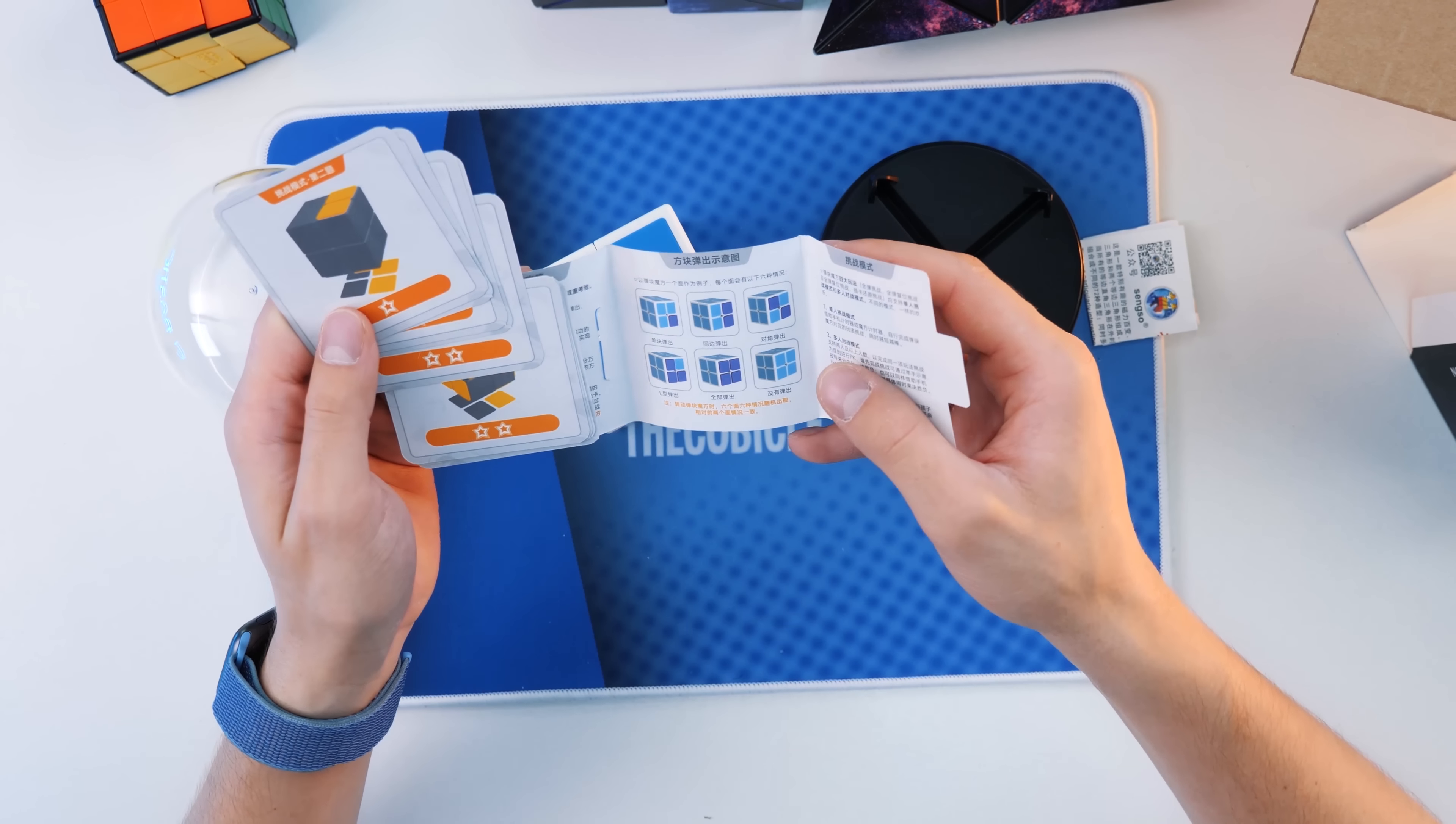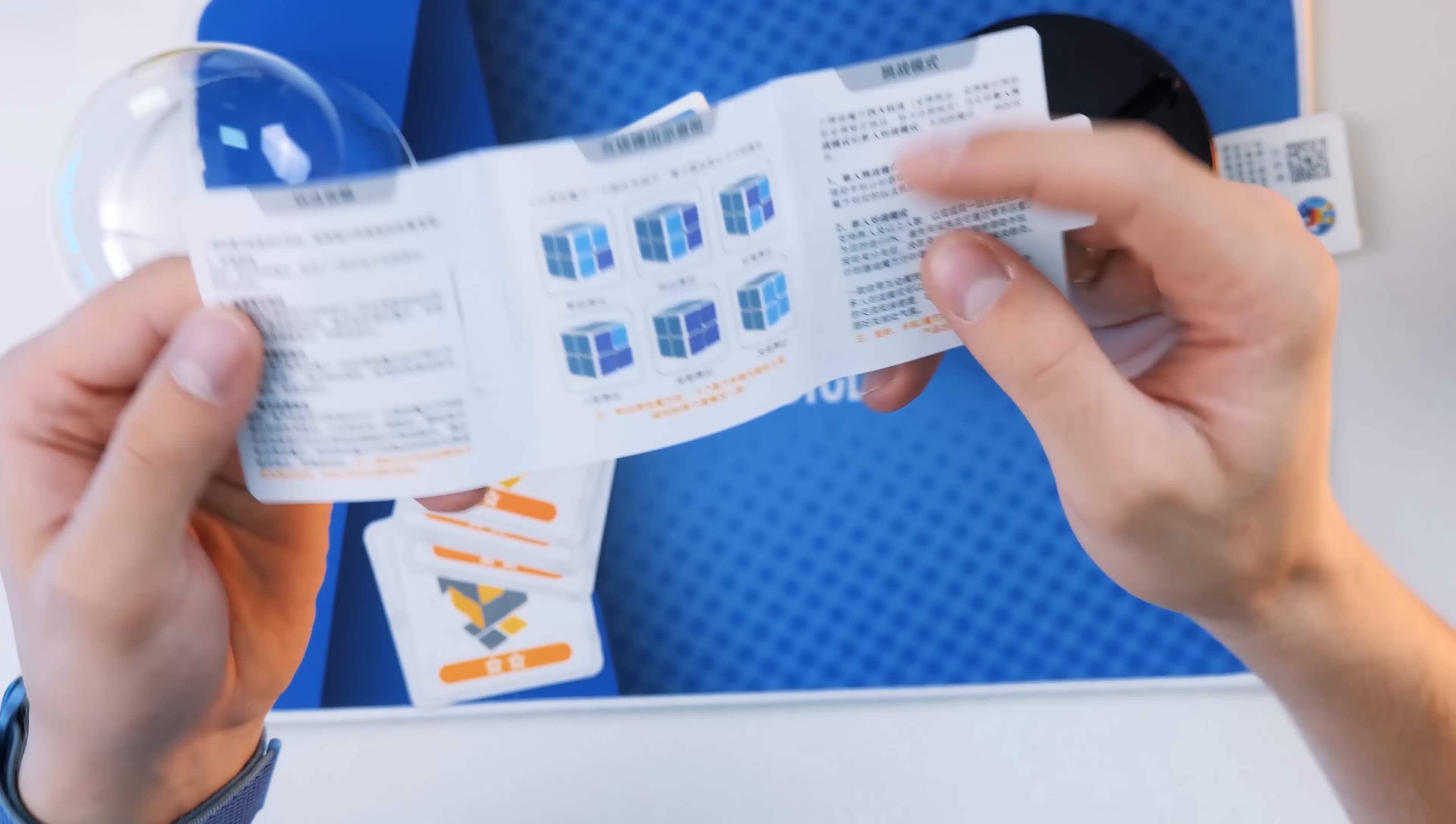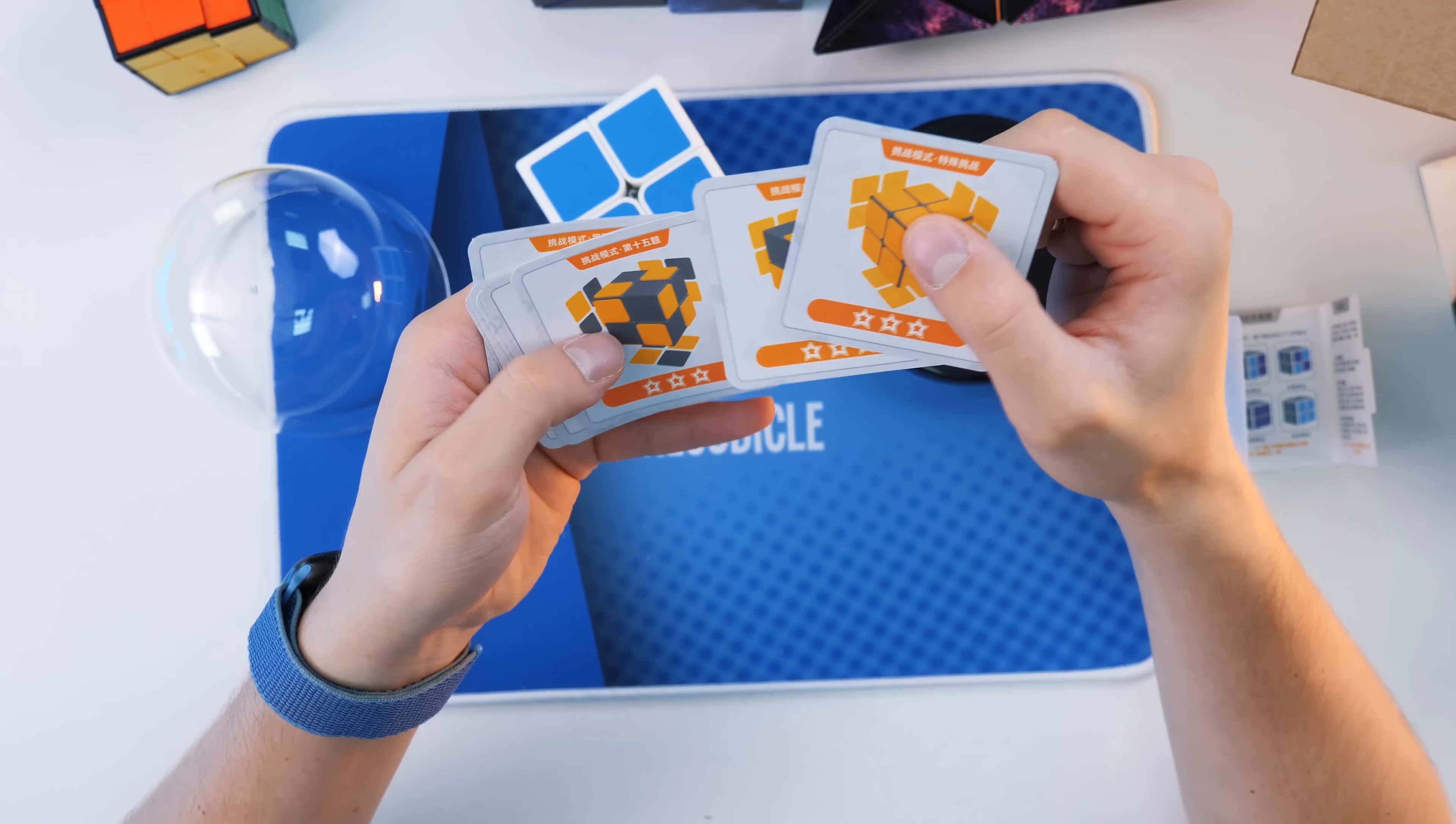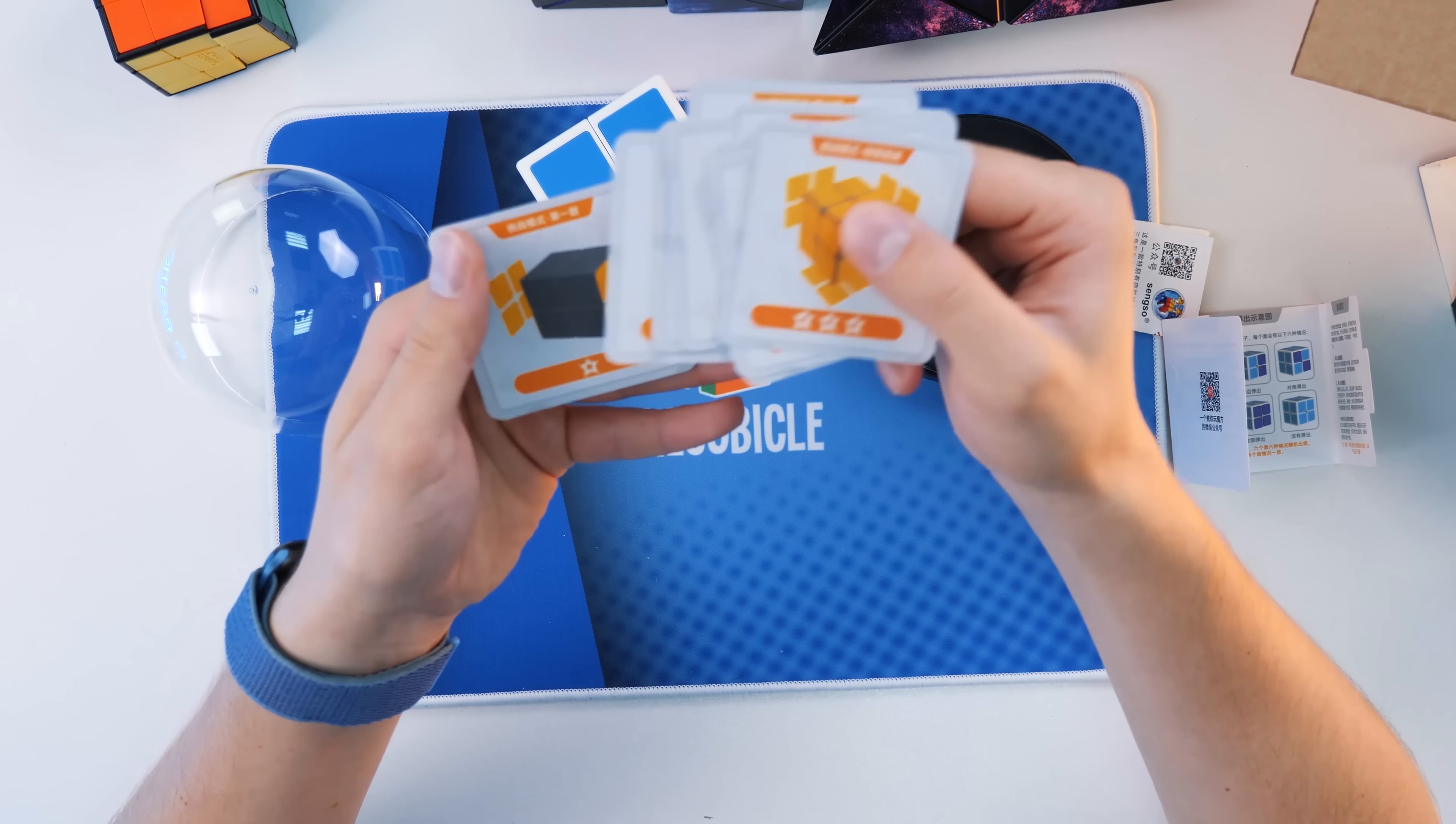There's something written here, and wait, and there's something drawn. If I knew the Chinese language, maybe I would understand what's written here. Look, there are still some difficulty levels here.